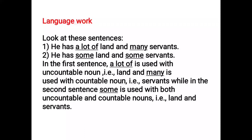Look at these sentences: Number 1 — He has a lot of land and many servants. Number 2 — He has some land and some servants. In the first sentence, 'a lot of' is used with uncountable noun, that is 'land', and 'many' is used with countable noun, that is 'servants'. While in the second sentence, 'some' is used with both uncountable and countable nouns, that is 'land' and 'servants'.